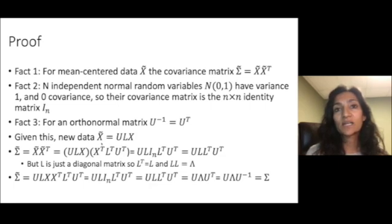Now you see here that you have X and X transpose right next to each other, which is the covariance matrix of the n independent random variables. So we can substitute that with the n-dimensional identity matrix, I sub n, and this goes away. Then we have U, L, L transpose, U transpose.